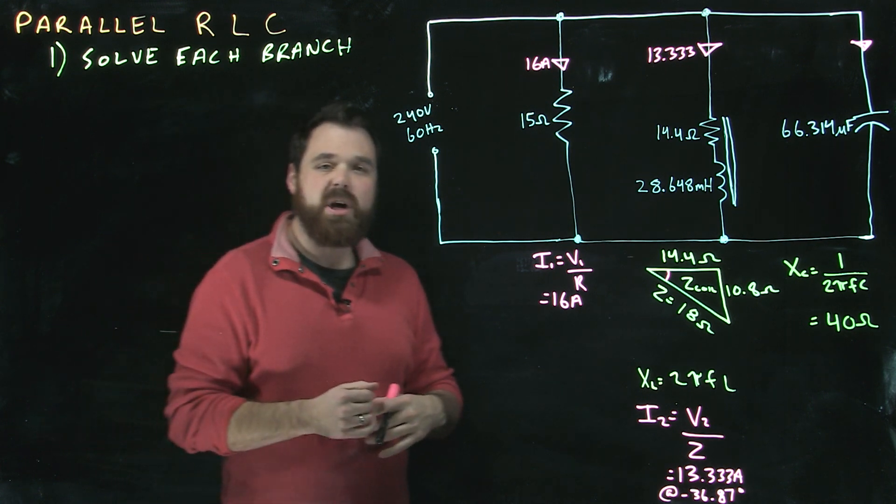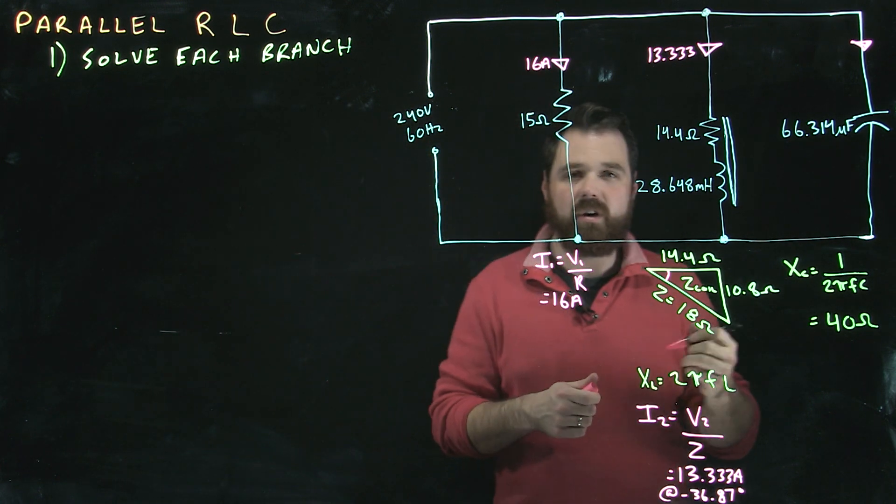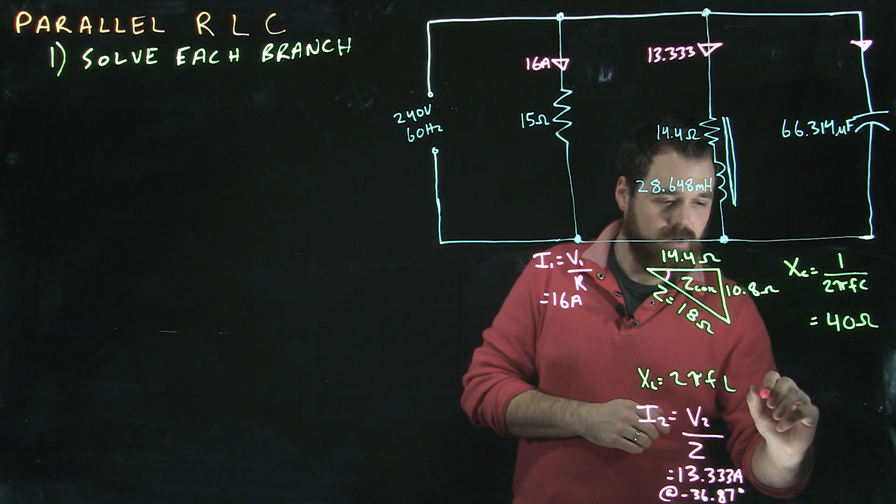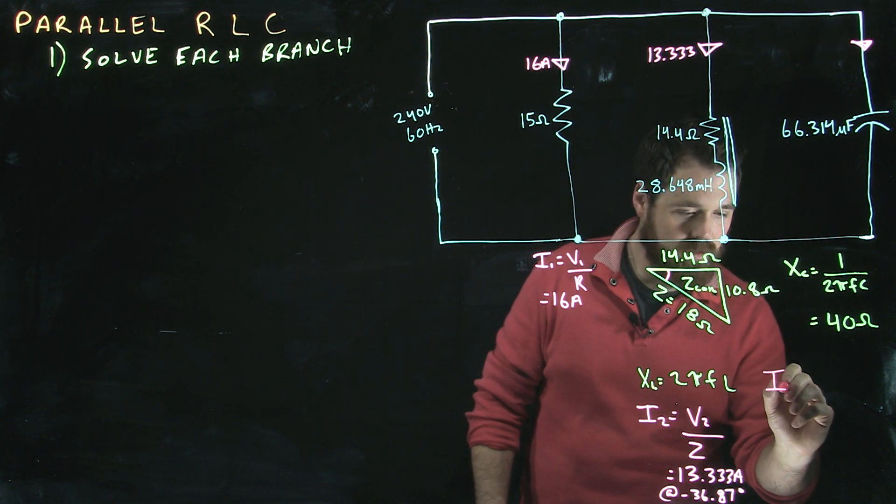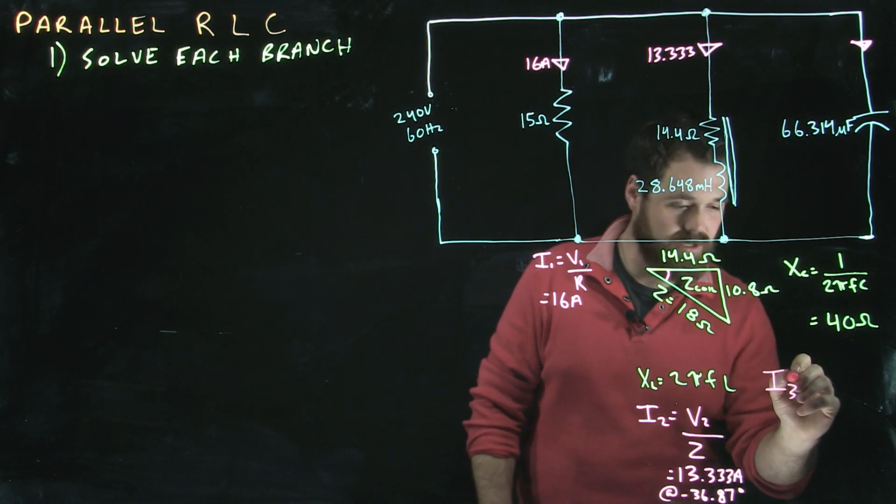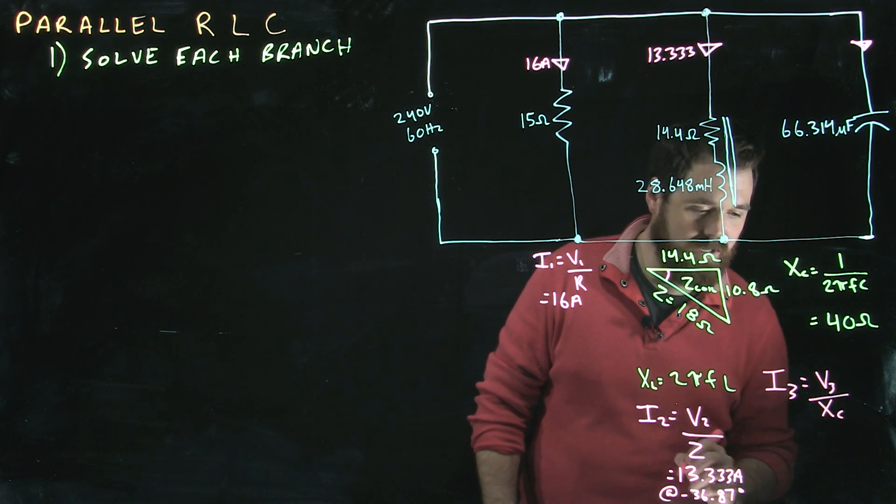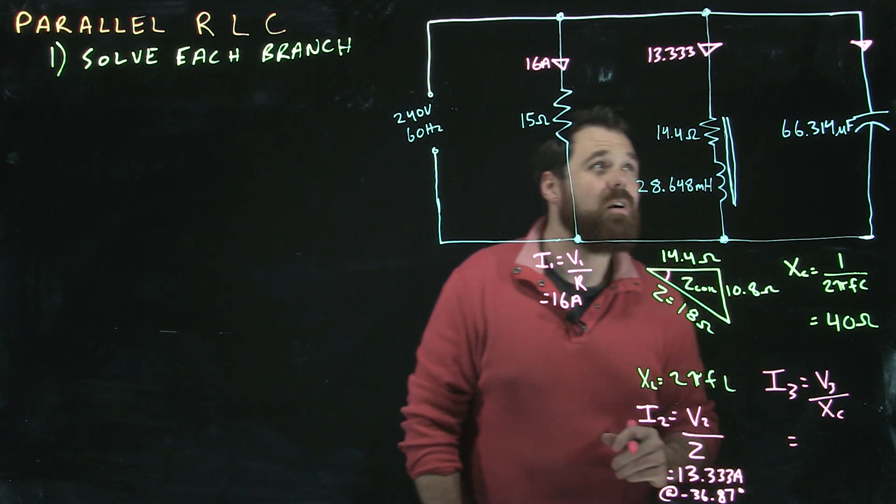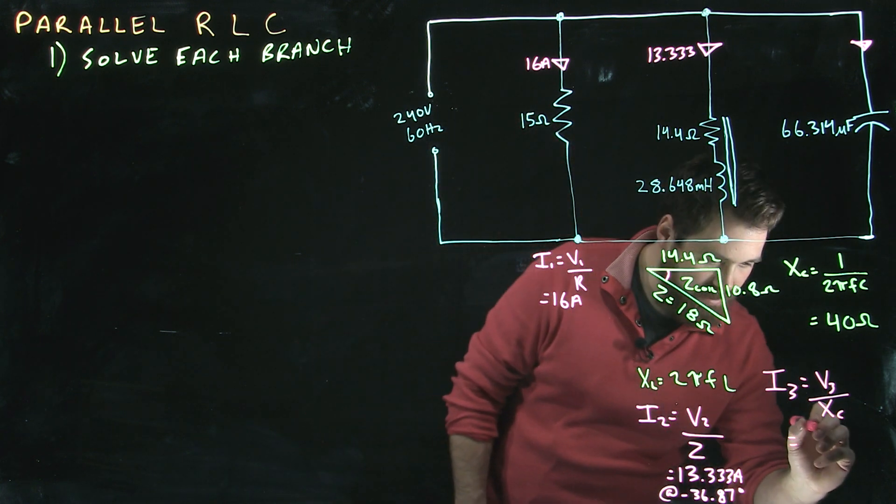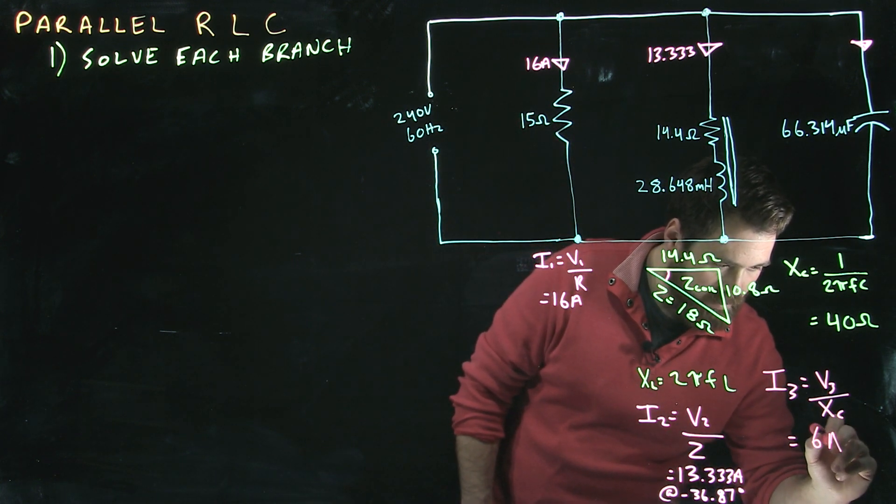Now once we have that capacitive reactance, we can figure out the current flowing through that branch. We can go I3, because it's the third branch, equals V3 divided by XC. And we end up with 6 amps.